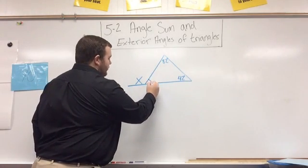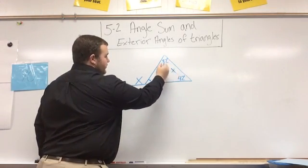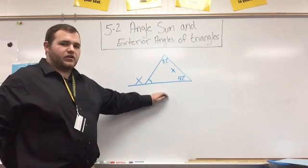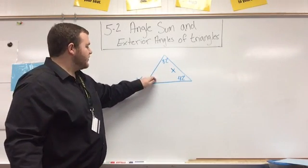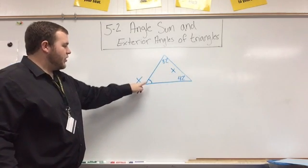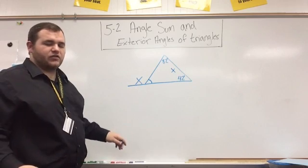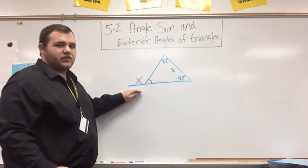Because we know this angle, added with these two angles, equals 180 degrees. Because all triangles have 180 degrees. So this one, added with these two, equals 180. But also, this angle, added with X, is 180 degrees as well, because it's a straight line and they're supplementary.